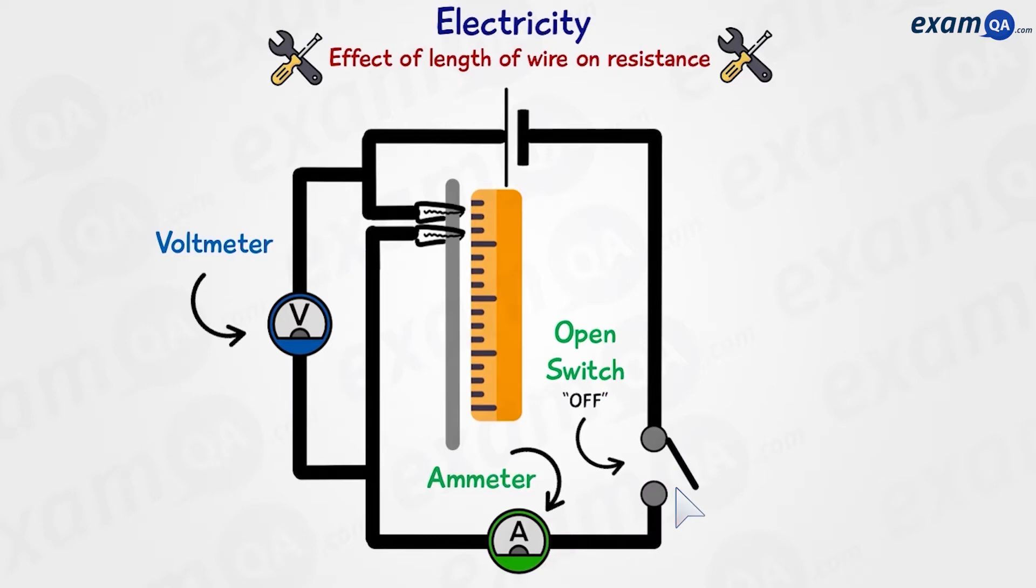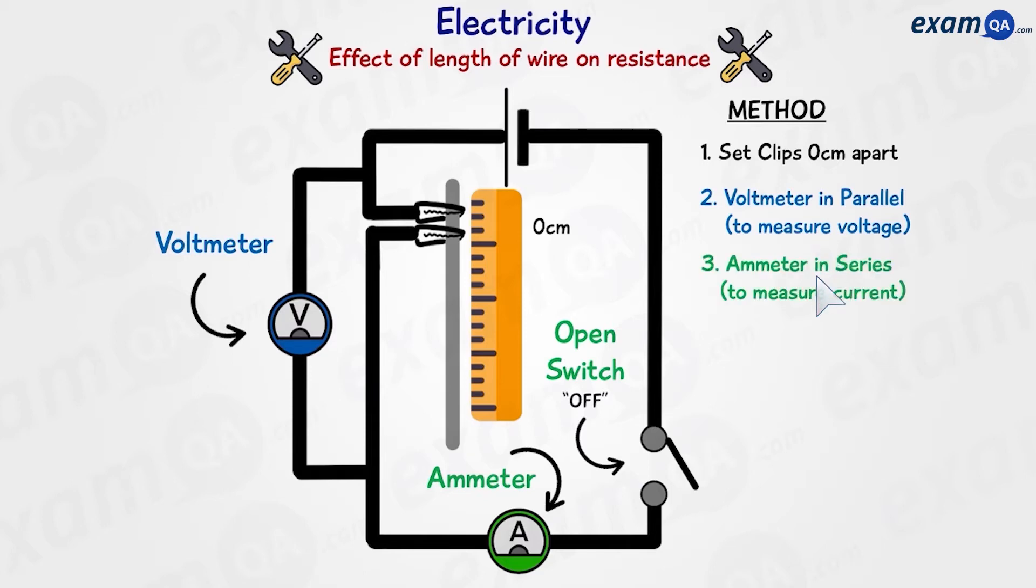When it's open like this, it means the circuit is off and there's no current flowing. So the method of the practical is going to be the following. Number one, we're going to set the crocodile clips zero centimeters apart from each other. We're going to have the voltmeter in parallel to the crocodile clips to measure the voltage, and the ammeter in series to measure the current.